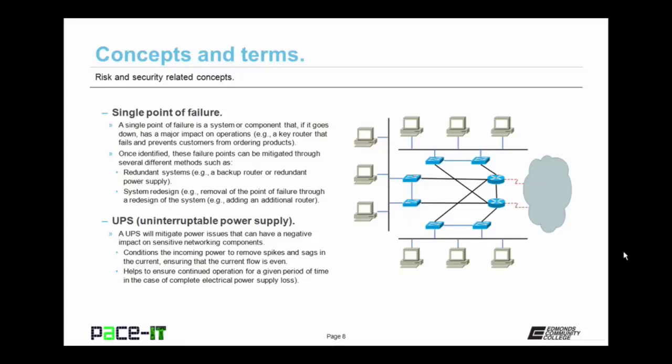You should also be familiar with uninterruptible power supplies, or UPS. A UPS will mitigate power issues that can negatively impact sensitive networking components. It conditions the incoming power to remove spikes and sags in the current, ensuring even and consistent flow, which is very beneficial to your electronic and networking components. A UPS also helps ensure continued operation in the case of complete electrical power loss. Depending on your UPS, you may be able to run for minutes, hours, or possibly days if you have a generator.